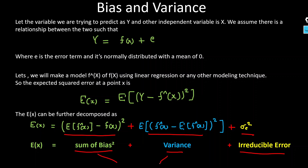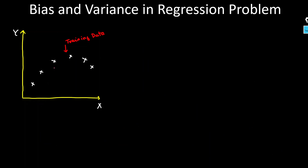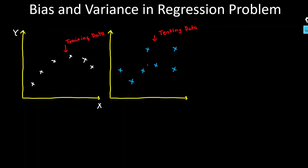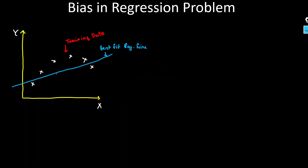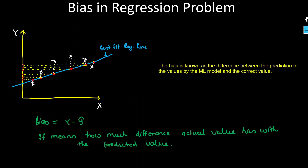Now let's discuss what bias and variance actually are. Consider this non-linear training data set and a separate testing data set. In the regression problem, I try to get the best fit line using a machine learning model such as linear regression. We get the error by taking the distance, squaring it, and summing — giving us the difference between the actual y and the predicted y-hat. That difference is called bias: the difference between actuality and prediction.